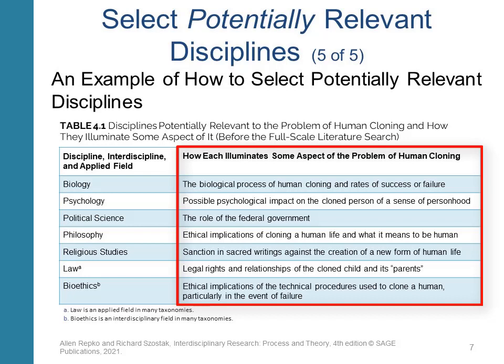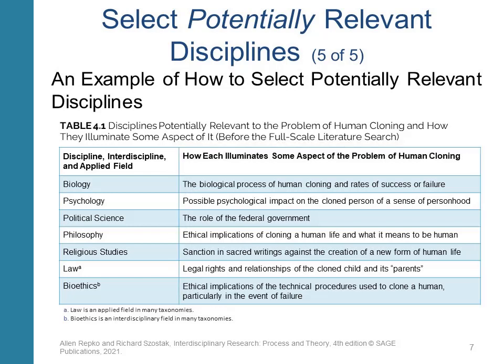The right column covers each discipline's take on causes, outcomes, prevention, treatment, and so on. For example, psychologists might want to examine the psychological impact of being a cloned human. We can continue using a table like this one as we complete Step 3 and the subsequent steps, updating it as we go.